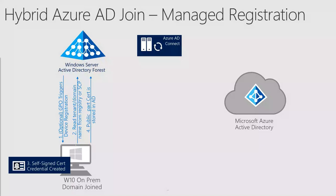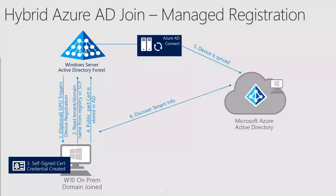Once the certificate is created, the public part of the certificate will be presented and stored in on-premises Active Directory. At the point of the next sync cycle, Azure AD Connect will sync the device to Azure Active Directory and the device object is created. This device object shows up as a pending status until the device registration is complete. The workstation uses the domain and tenant information from SCP or registry to make the request to Azure Active Directory using the private key of the self-signed certificate. Once Azure AD authenticates successfully, it issues the token to the synced device.